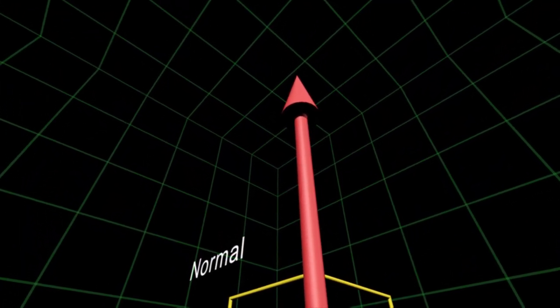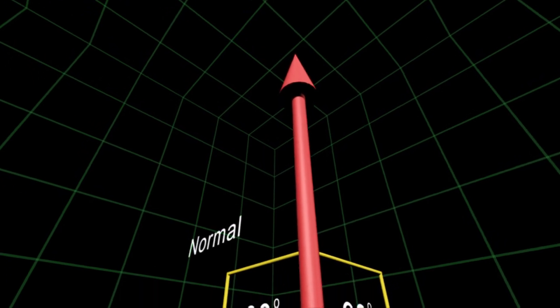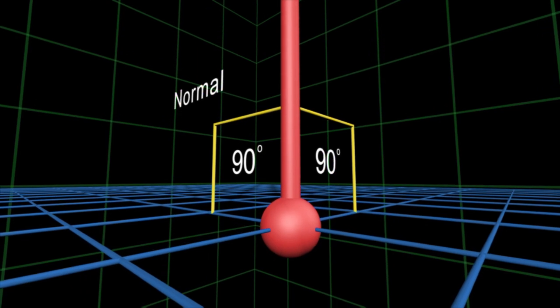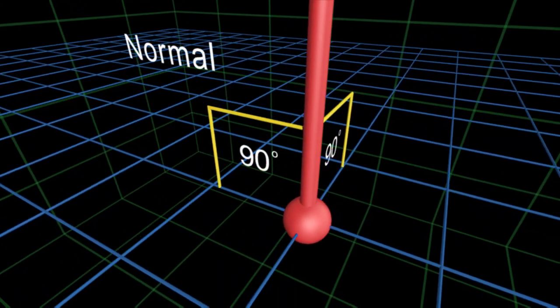To help you remember what the normal force is, think of it as the perpendicular contact force. Any time a surface and an object are interacting at right angles, you will find the normal force in action.